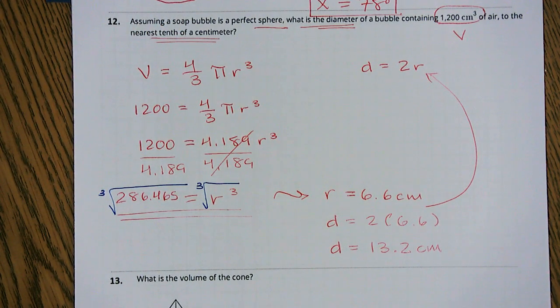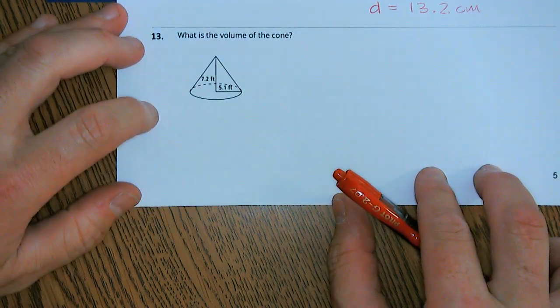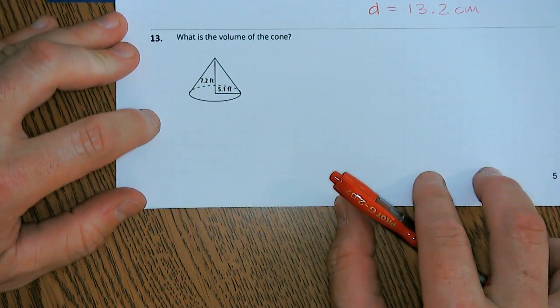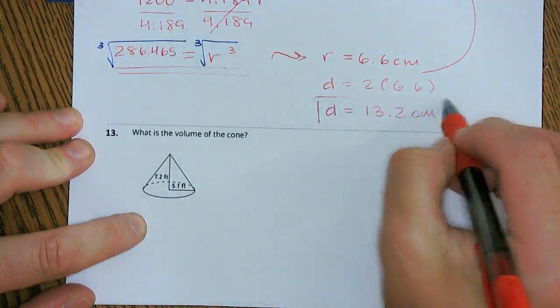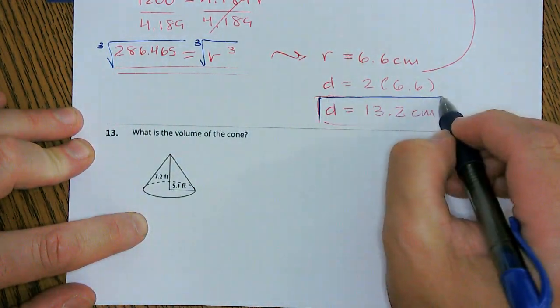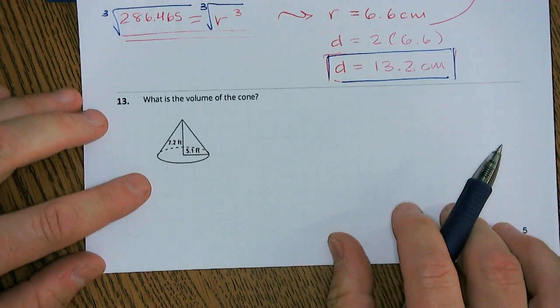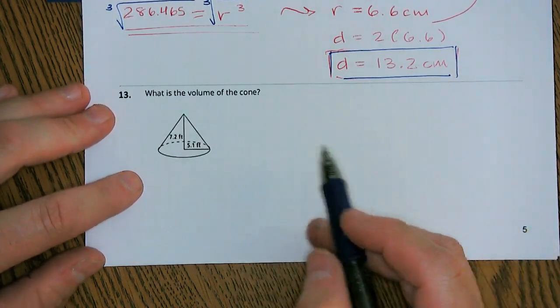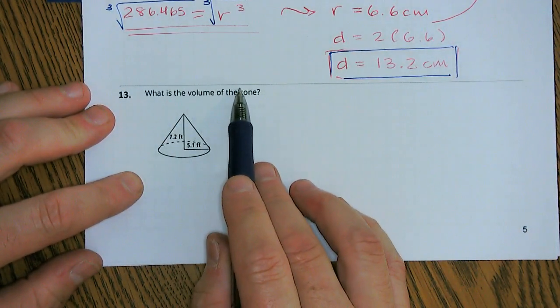All right. One more. Last one, best one. Number 13. What is the volume of this cone? Sorry, I got the box around there because my pen is dying. So let's do this in blue then.